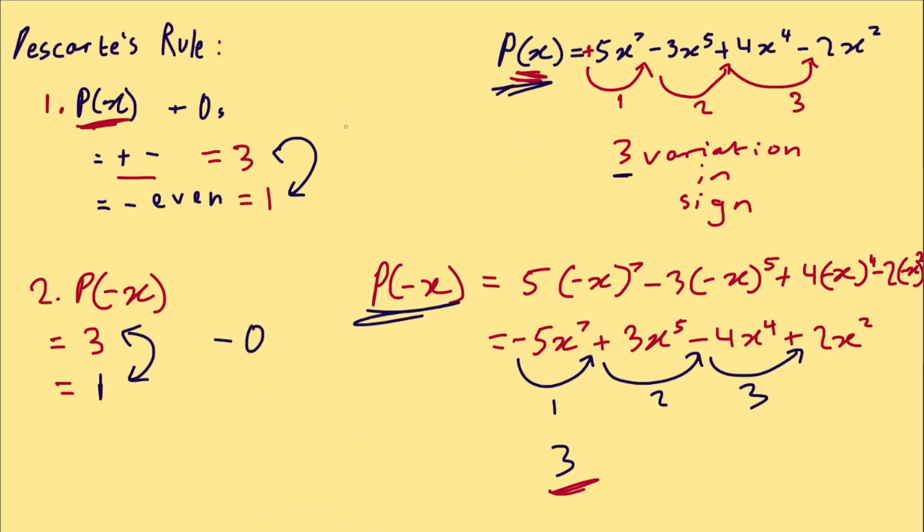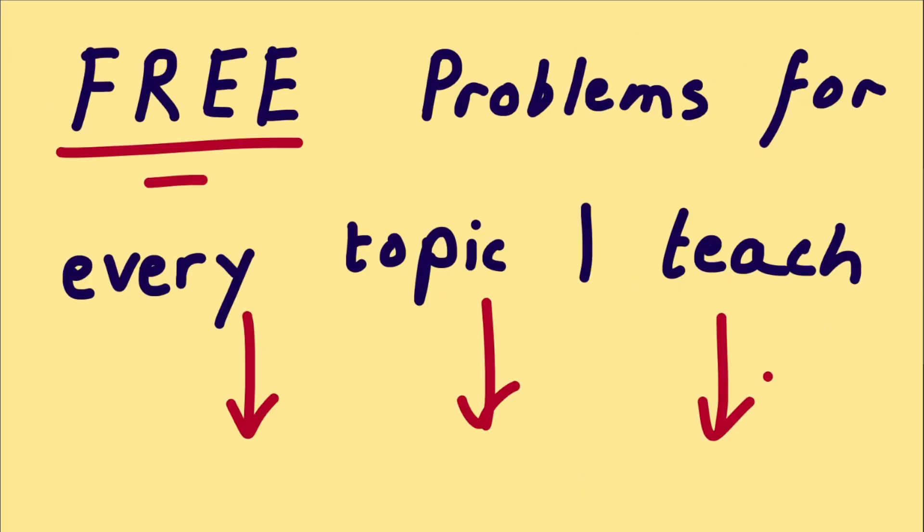So now we know there's anywhere between two to six real zeros in this polynomial P(x). If you want to practice problems for what I covered today, they're in my discord, they're in the description.